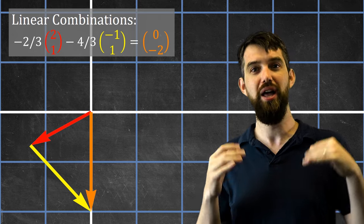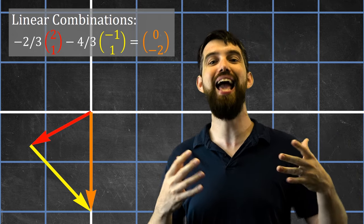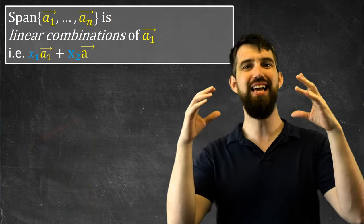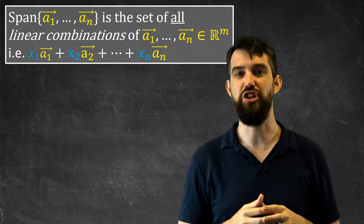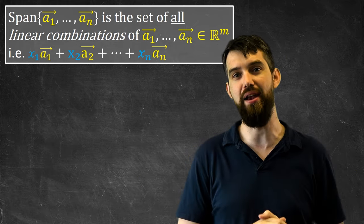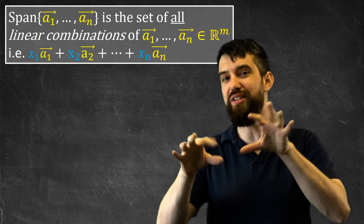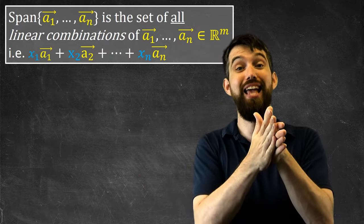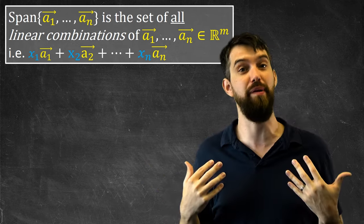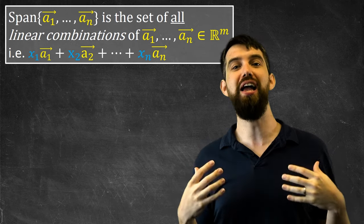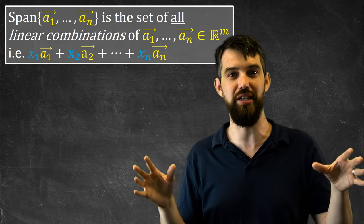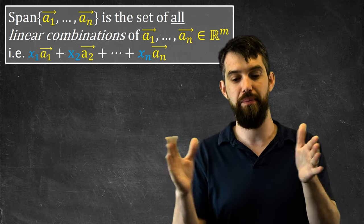My goal right now is just to illustrate how you can take linear combinations of vectors and that geometrically they end up equaling some other vector. Now I want you to imagine all the possible ways to take a linear combination of n different vectors a1 through an, considering all the different scalar multiples. That collection of all possible outputs is going to be defined as the span of those vectors — all the possible linear combinations of a1 through an.